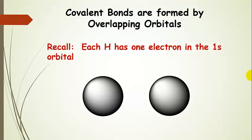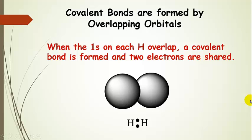Another thing to keep in mind — and this will come up more as we talk about hybrid orbitals — each of these hydrogens has one electron in the 1s orbital. Covalent bonds form when orbitals overlap. That's how the sharing occurs. If we take these two 1s orbitals and overlap them, we have a covalent bond. Here's our Lewis dot structure showing this covalent bond. The 1s orbitals on each hydrogen overlap and form a covalent bond where they share two electrons, and both of them can enjoy a noble gas configuration like helium.